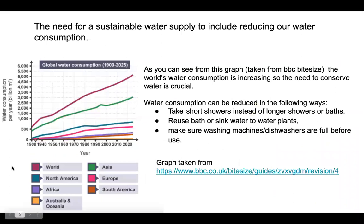The next topic is about the need for a sustainable water supply, including reducing our water consumption. As you can see from the graph on the left — taken from BBC Bitesize — if you're looking at the purple line, which represents the world, water consumption is going up and is predicted to continue to go up. So we need to cut it down.